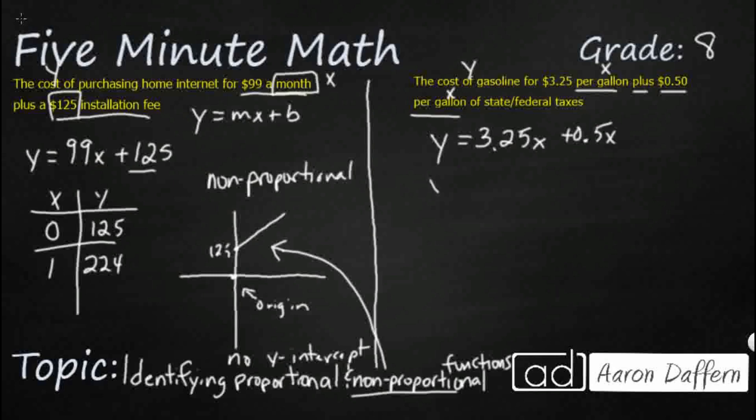So we can actually combine those like terms, so we can say it's 3.75 per gallon.